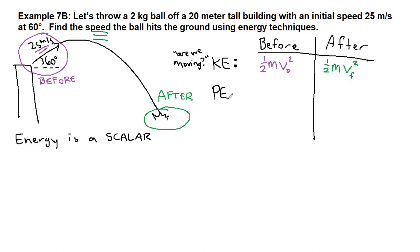When we ask ourselves, are we moving at the start of the problem, the answer is a definitive yes, because we have a number value for that initial speed: one half m v initial squared. When we ask if we're moving at the end, that is also a definitive yes, because that is the thing we are looking for.